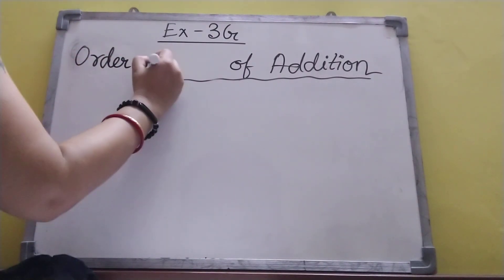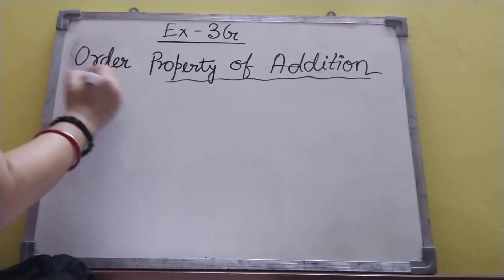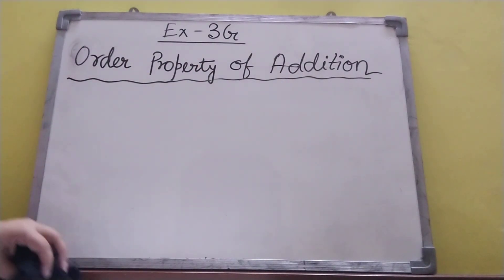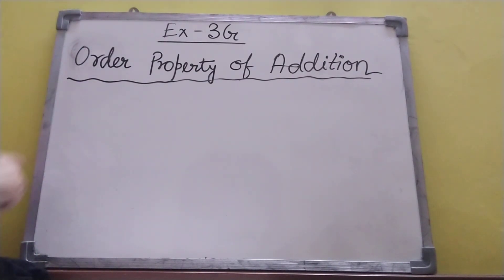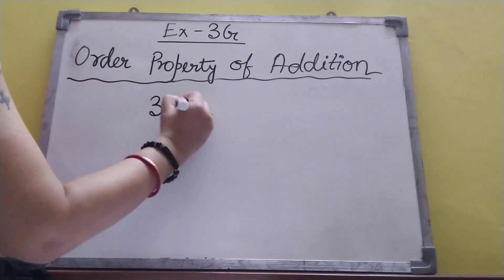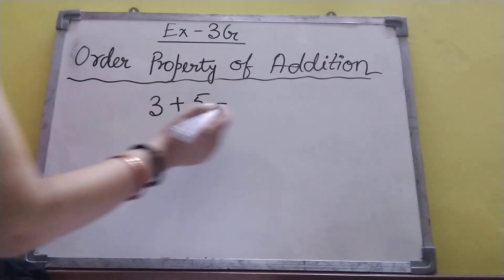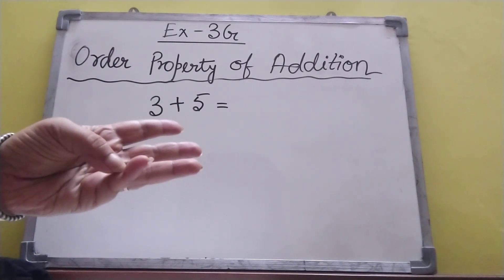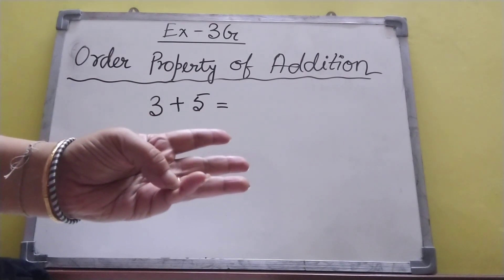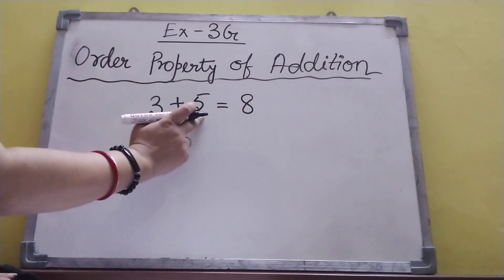Order property of addition. Remember, order property you can use when two numbers you are adding. Suppose three plus five — two numbers you are adding. Five is the bigger number. Three is here, so five, six, seven, eight. Answer is eight. This is the order: three plus five.